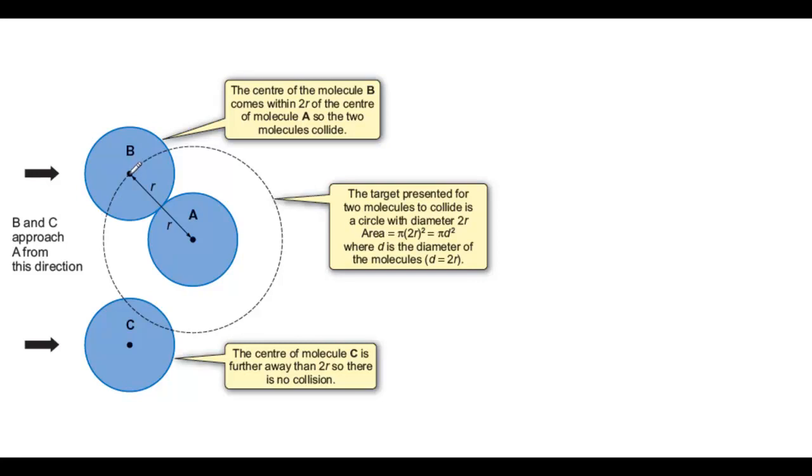Focus on the centres of A and B. The distance between these two centres is twice the radius, because they're just touching, and twice the radius is the diameter. We give this a symbol D.